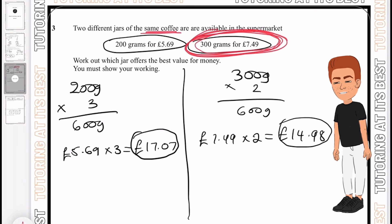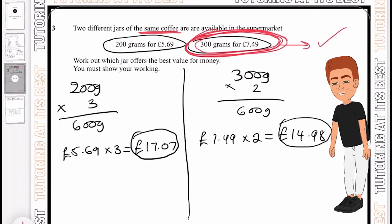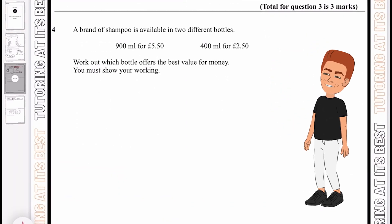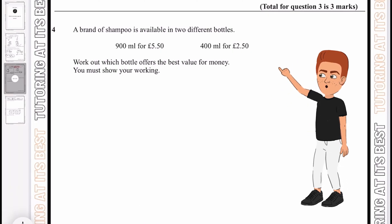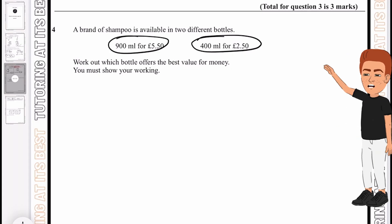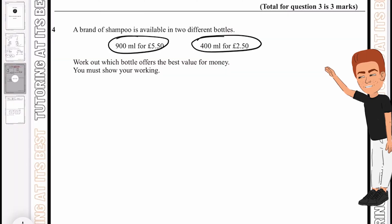That's just over £2 that you're saving, and that's the same coffee available but just in different sizes. It's better if you get two 300 gram jars rather than three 200 gram jars. Let's now move to question 4. A brand of shampoo is available in two different bottles: 900 ml for £5.50 and 400 ml for £2.50. Let's work out which bottle offers the best value for money. I want you to attempt this, then we'll go through it together.